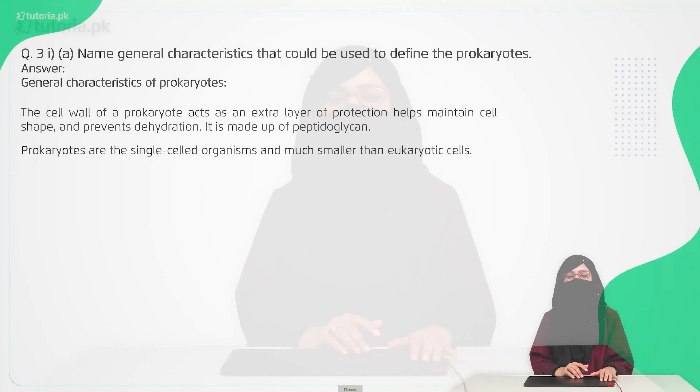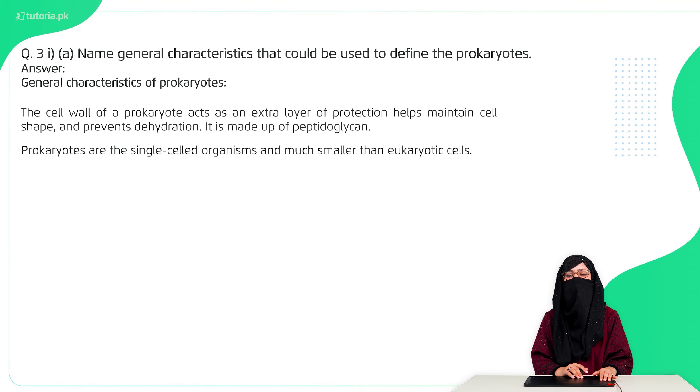Now we will discuss the short questions of this chapter. The first short question is: name three general characteristics that define the prokaryotes, i.e., in prokaryotes there are three general characters.